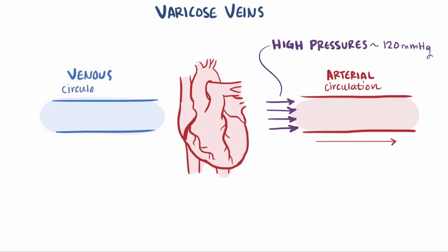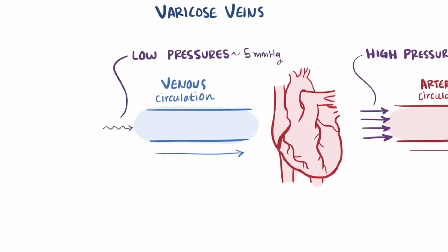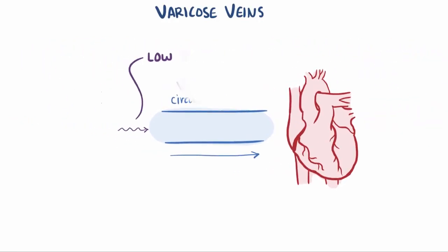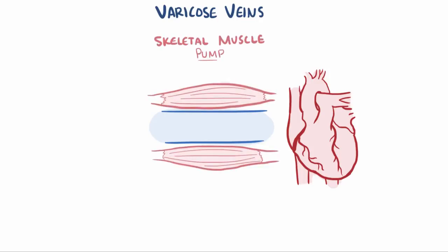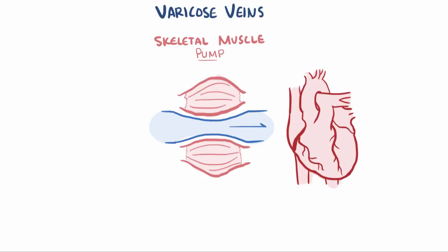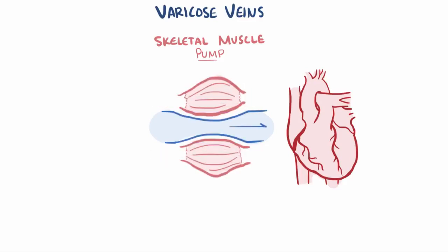The venous circulation, going back to the heart, is a low pressure system with a central venous pressure around 5 mmHg. This means that the movement of blood has to rely heavily on what's called the skeletal muscle pump, which is just a way of saying that it relies on the contraction of surrounding skeletal muscles, which compresses the vein and propels blood through the vessels.